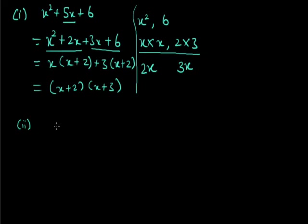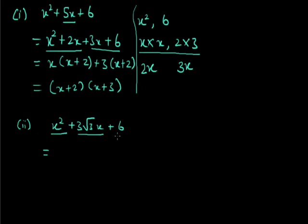Now we will see more examples. Consider x² + 3√3x + 6. The middle term is 3√3x. Keep in mind that this method applies to quadratic polynomials, where the middle term always contains x with power 1. The variable with power 2 is the first term, the variable with power 1 is the middle term, and the constant is the third term. We must arrange the terms in this proper order before proceeding.